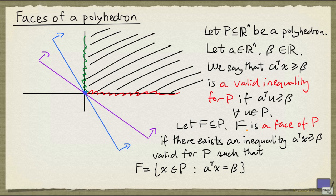In other words, if F can be written as the set of points in P satisfying some inequality with equality, then F is called a face of P. And we say that the inequality A transpose X greater than or equal to beta induces the face F. Or we can say that F is induced by the inequality A transpose X greater than or equal to beta.